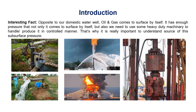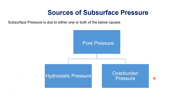The question arises: what is the source of this pressure — from where does the pressure come in oil and gas which is present underground? There are two main sources of subsurface pressure. These two sources are hydrostatic pressure and overburden pressure. Any oil and gas reservoir underground can have pressure due to either one or both of these reasons — either hydrostatic pressure, overburden pressure, or both.